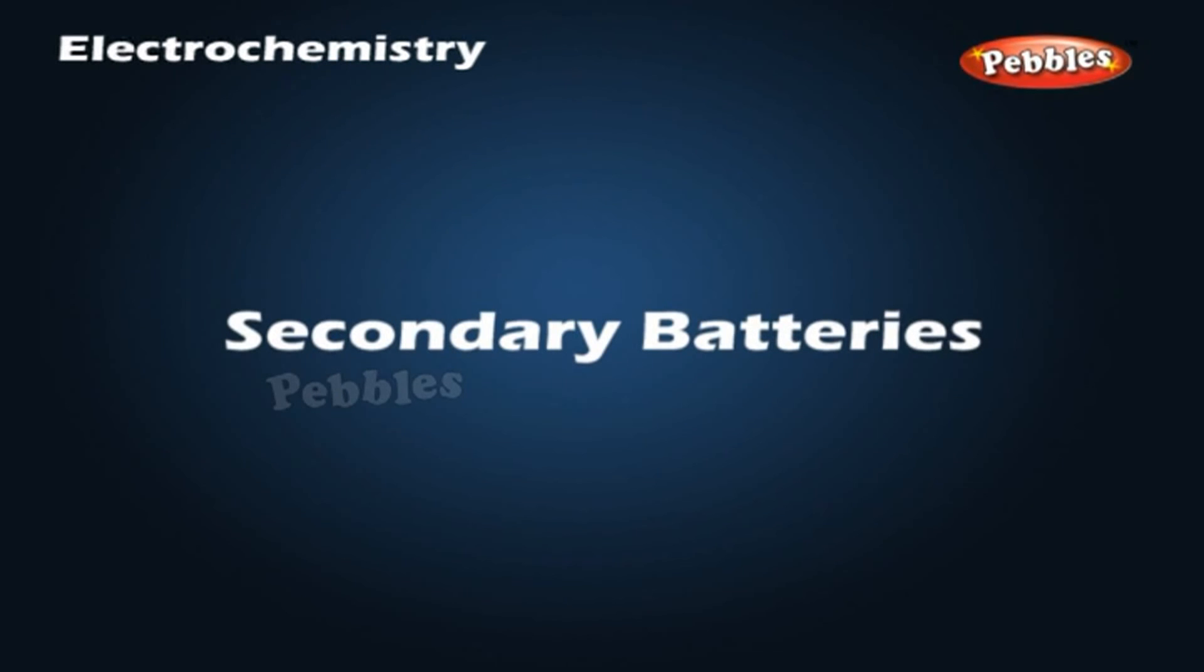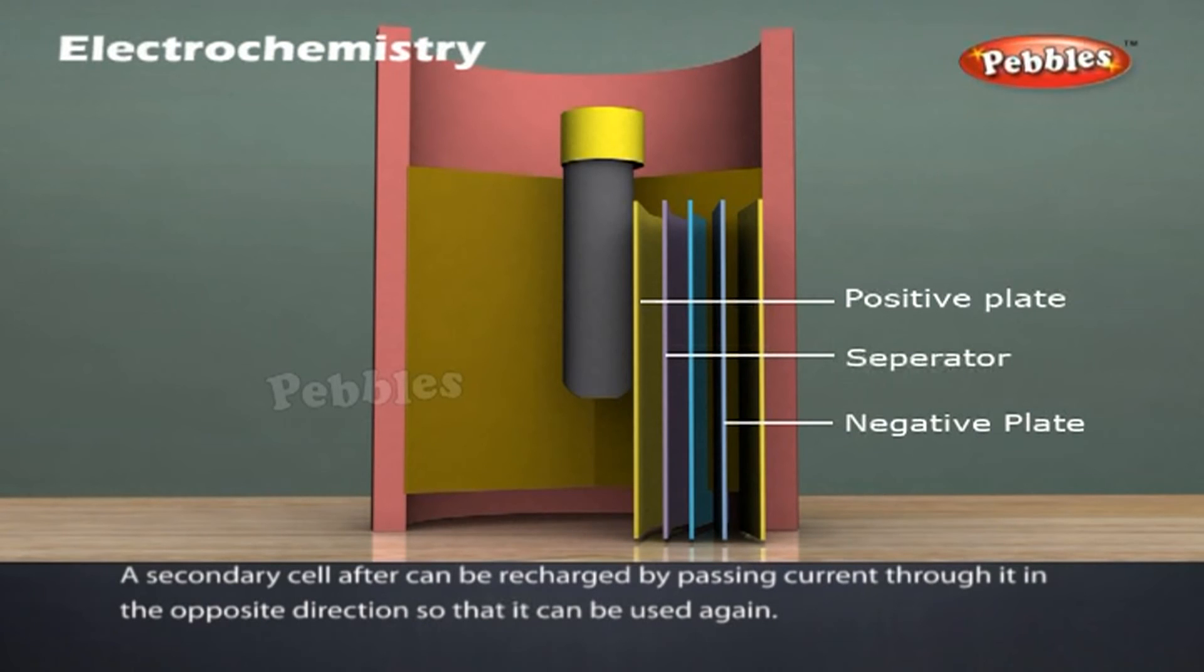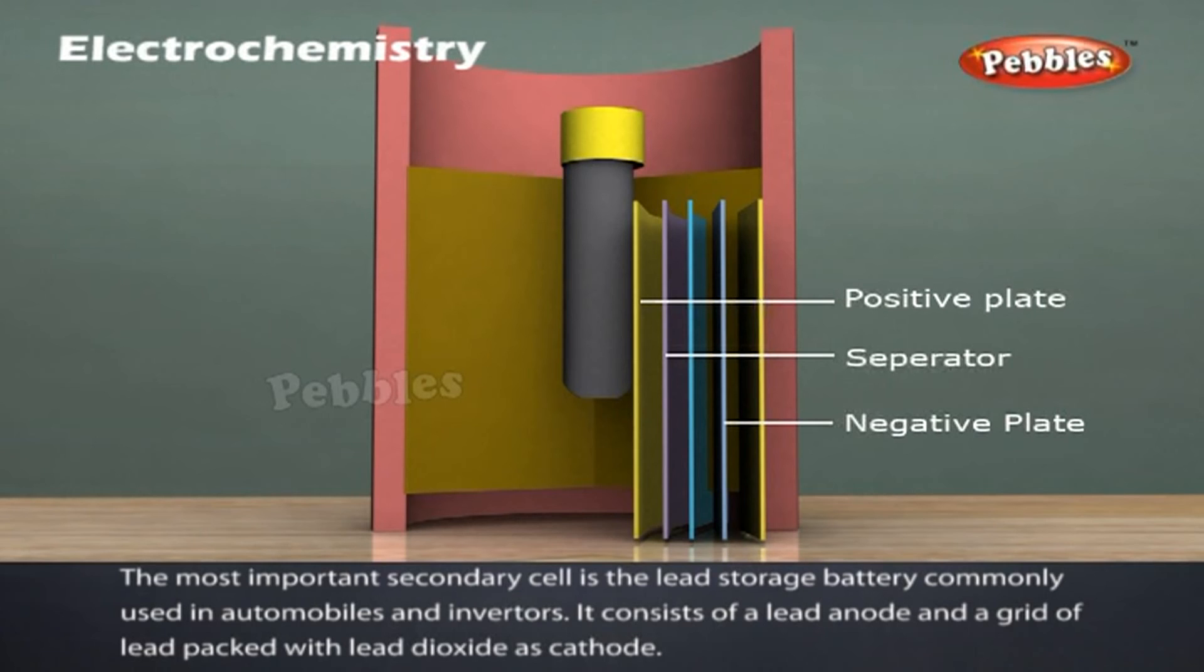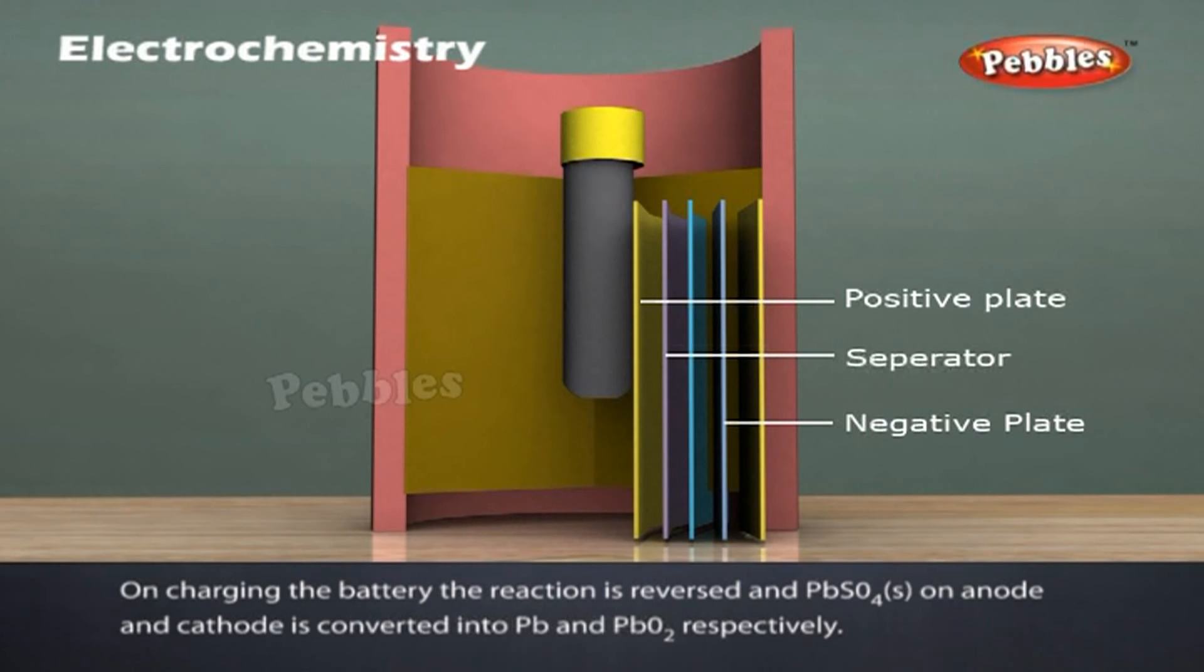Secondary batteries. A secondary cell can be recharged by passing current through it in the opposite direction so that it can be used again. The most important secondary cell is the lead storage battery commonly used in automobiles and inverters. It consists of a lead anode and a grid of lead packed with lead dioxide as cathode. On charging the battery, the reaction is reversed and PbSO4 on anode and cathode is converted into Pb and PbO2 respectively.